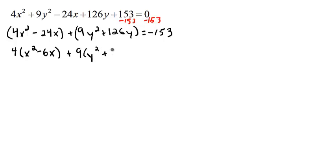plus 14y, and then that all equals still the negative 153. Now we want to start completing the square, so we're going to take our b term here which is in front of the x and then also in front of the y, divide them both by 2 and square it. So I'll do that over on the right side here.